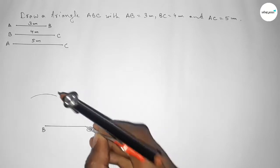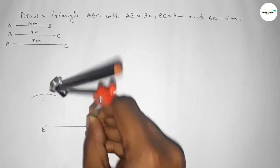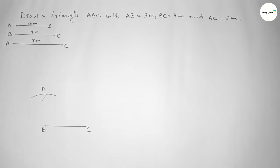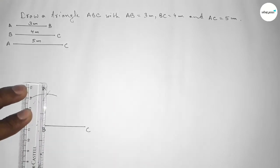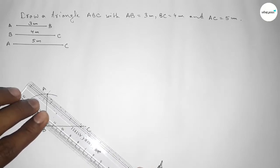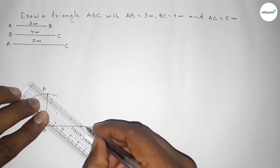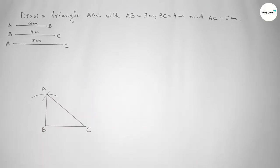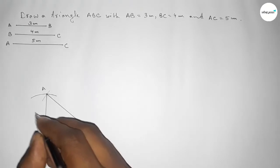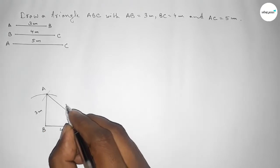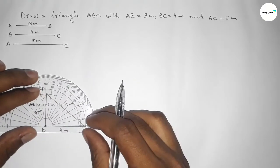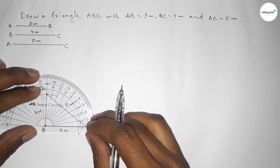Putting the compass at C and cutting an arc, so both curves intersect at a point — this is point A. Now joining A and B, then joining A and C to get the triangle. This side is 4 centimeters, this side is 3 centimeters, and this side is 5 centimeters. It looks like a right angle triangle.